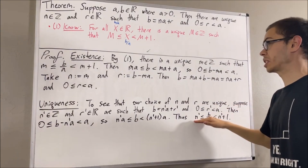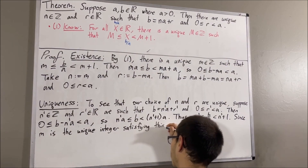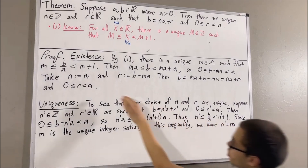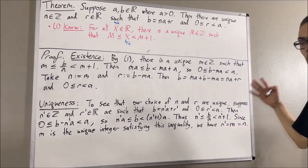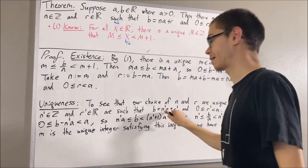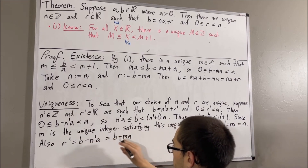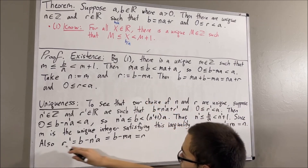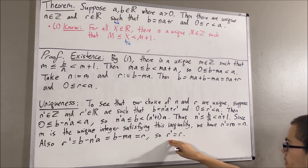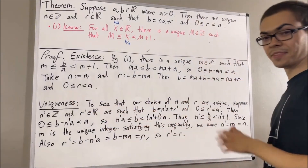Therefore, n prime must be equal to m. And we know that m is equal to n, so we have shown that n prime is equal to n. All that's left to show is that r prime is equal to r. We know that r prime is equal to b minus n prime a, and we know that n prime is equal to n. But b minus ma is precisely equal to r. So r prime is equal to r. We have shown that n prime is equal to n and r prime is equal to r, completing the uniqueness portion and the proof.